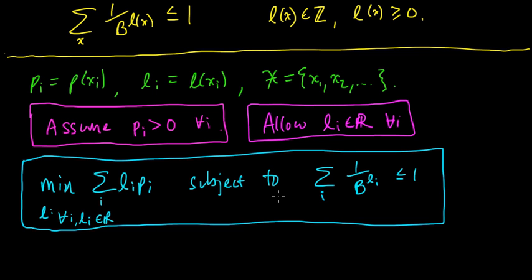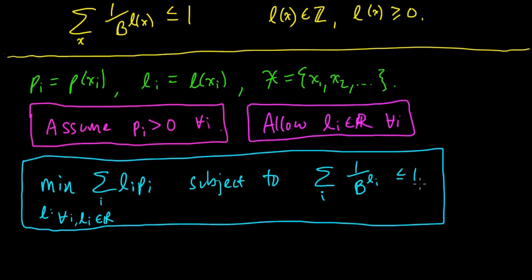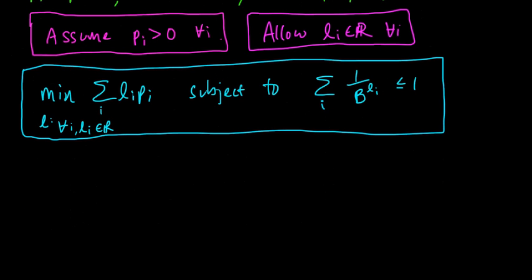If you're familiar with Lagrange multipliers, it should immediately come to mind that we can use them to solve this constrained minimization problem, and that's exactly what we're going to do. I'll assume familiarity with Lagrange multipliers. Before getting to that, let's see if we can simplify the problem further. We have an inequality constraint — let's see if we can reduce it to an equality constraint.